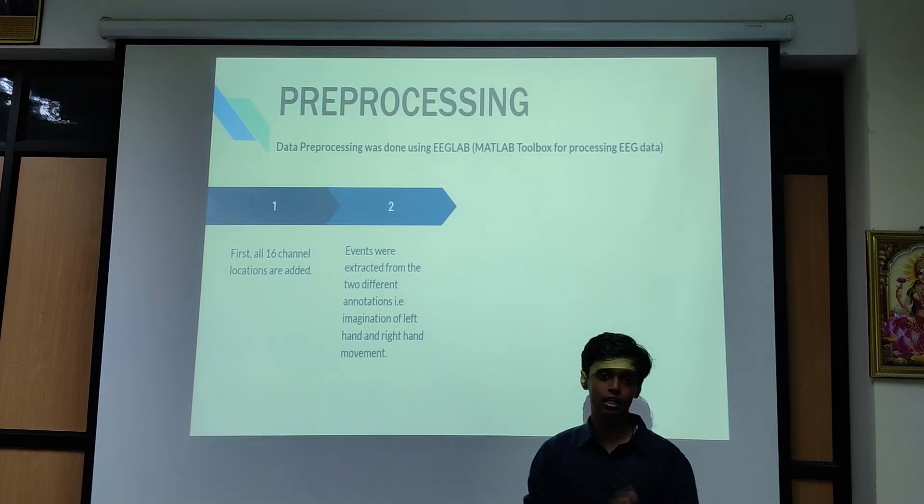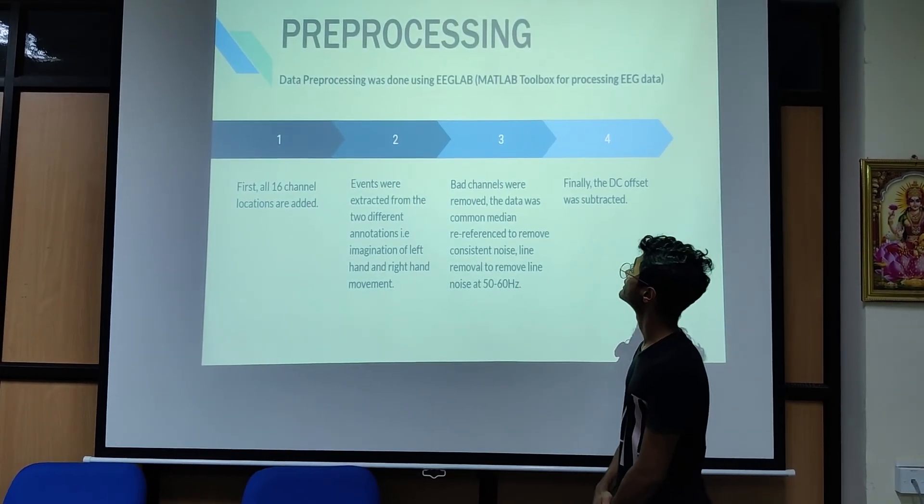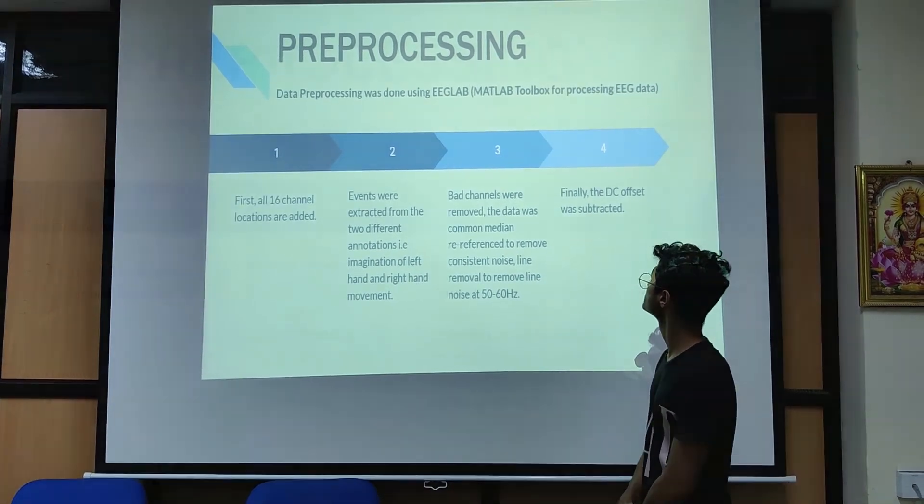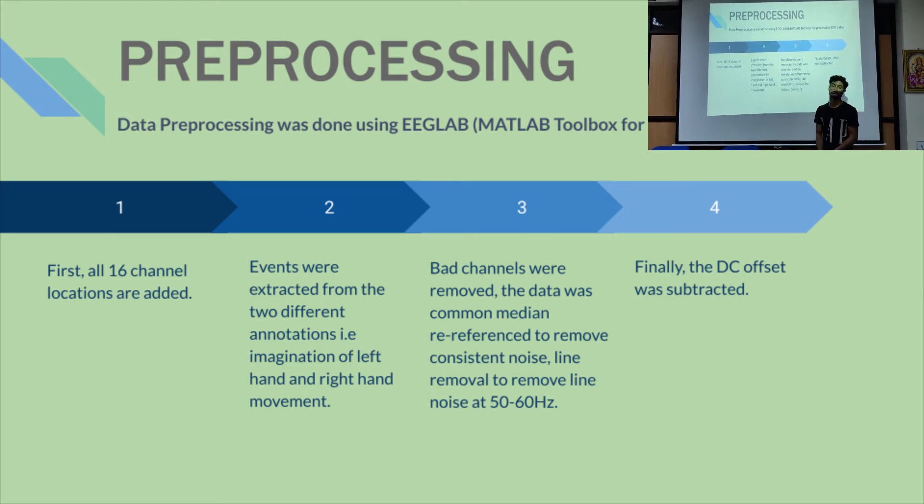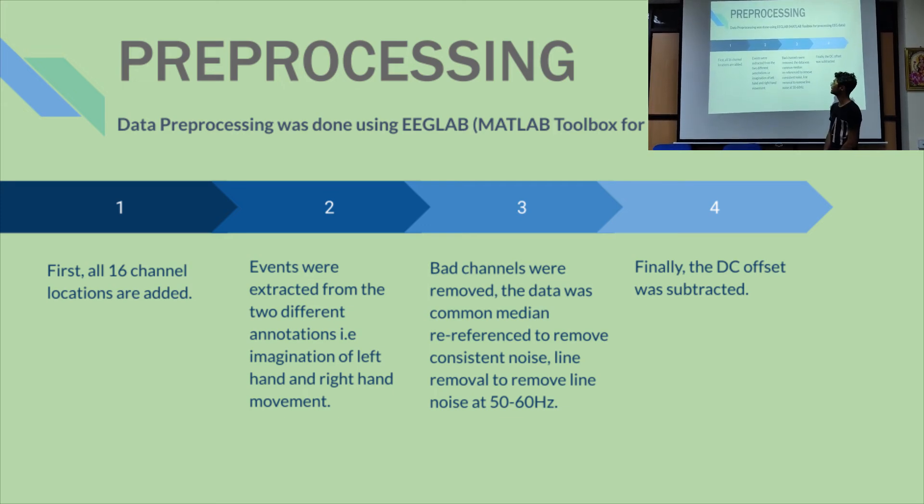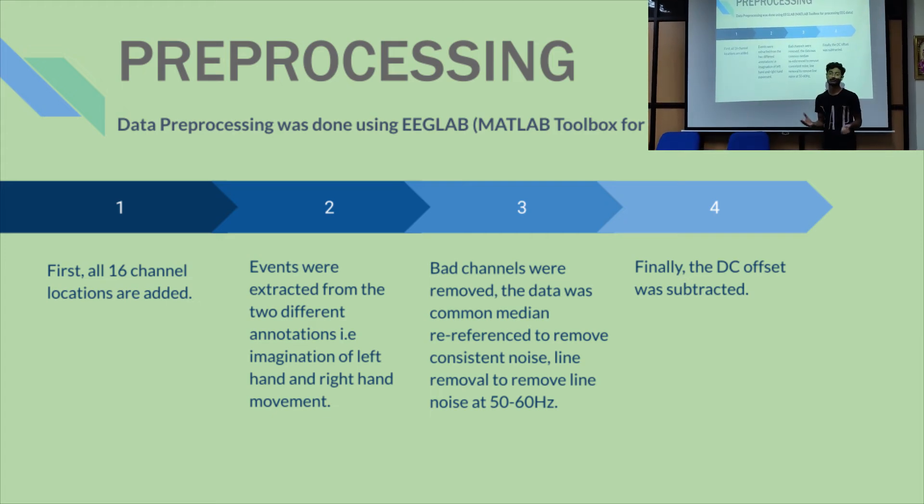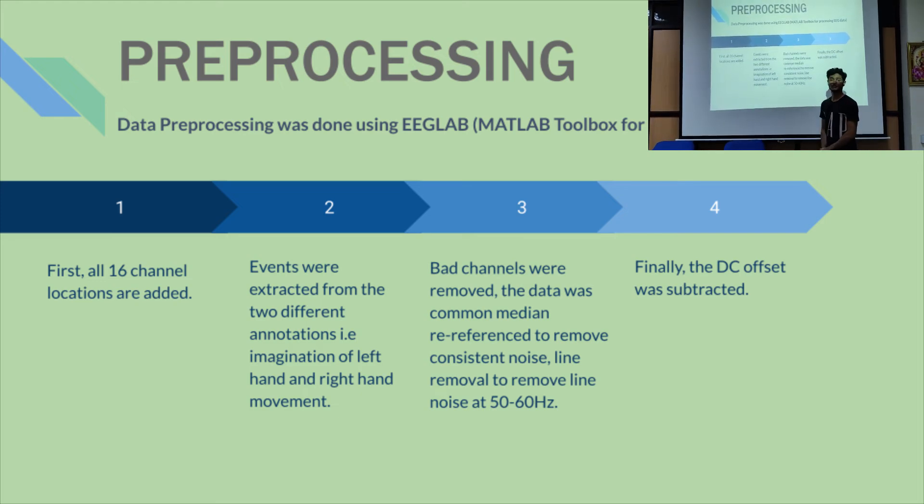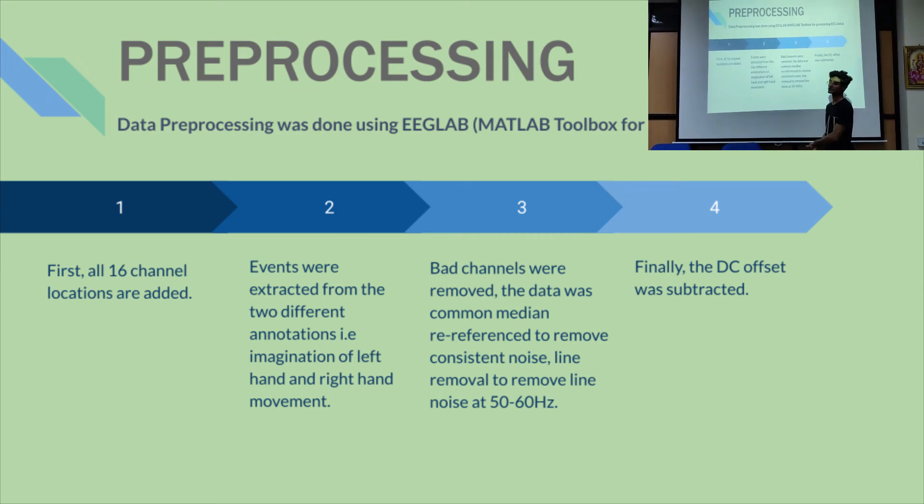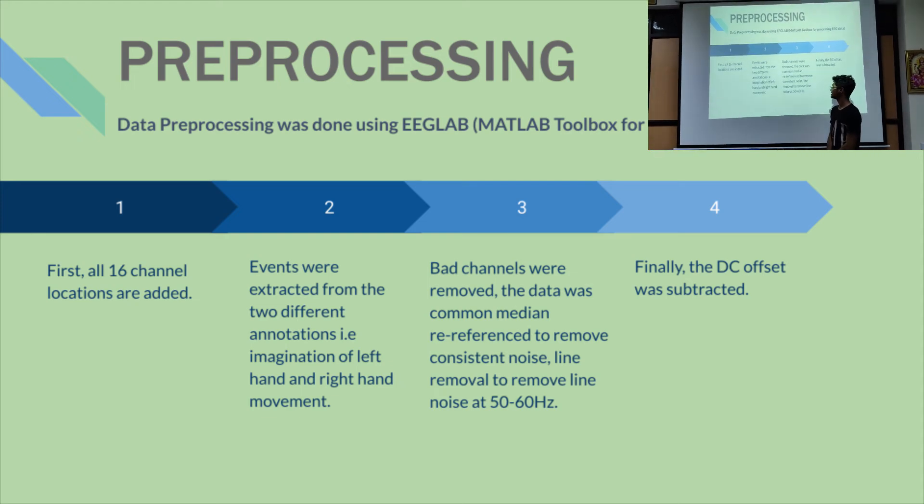So the preprocessing chain will be explained by Joel. So for data preprocessing we used EEG Lab. EEG Lab is a MATLAB toolbox for processing EEG. So in step one we have all 16 channel locations. Channel locations are basically the XYZ coordinates of all 16 electrodes in your EEG headset. And then we have the second step in which events were extracted from two different annotations, imagination of left hand movement and imagination of right hand movement. And the third step, we remove bad channels by visually analyzing them. We can make out which are the outliers from the data that we have. And it was commonly referenced to remove consistent noise.